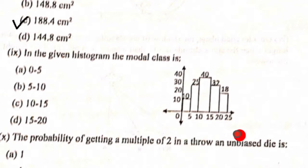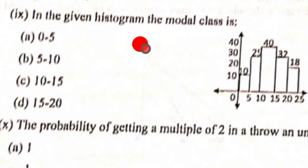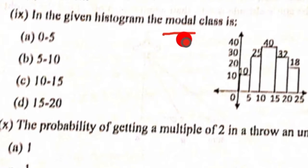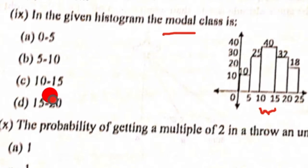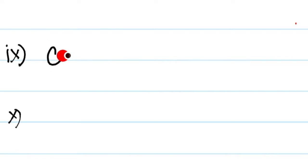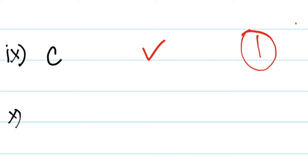Ninth question: In the given histogram, find the modal class. The modal class is where the mode is situated — mode means highest frequency. The tallest rectangle has a frequency of 40, corresponding to the class interval 10 to 15. So the modal class is 10 to 15, option C.